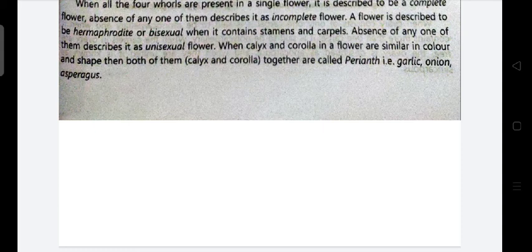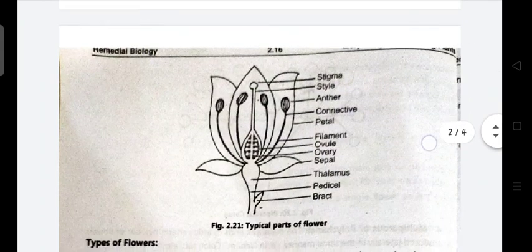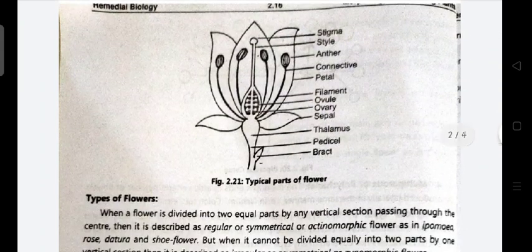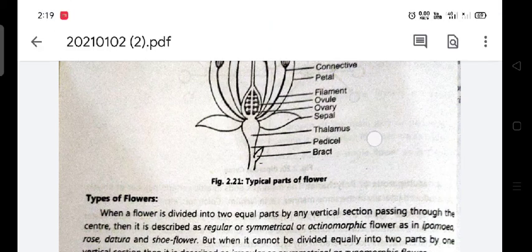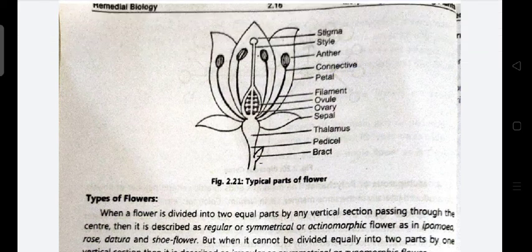When the calyx is green and the corolla is brightly colored, both are present. But if both are present in one color and one shape, we call them the perianth — for example, garlic and onion. Now this is the typical structure of a flower: you can see the stigma, style, anther, connective, petal, filament, ovule, ovary, sepal, thalamus, pedicel, and bract.